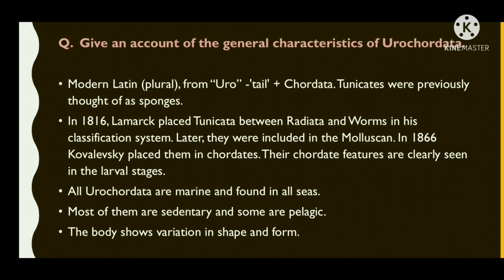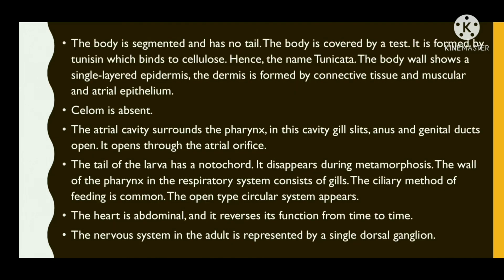All urochordates are marine and found in all seas. Most of them are sedentary and some are pelagic. The body shows variation in shape and form. The body is not segmented and has no tail. The body is covered by a test or tunic, formed by tunicin which is related to cellulose; hence the name tunicata.